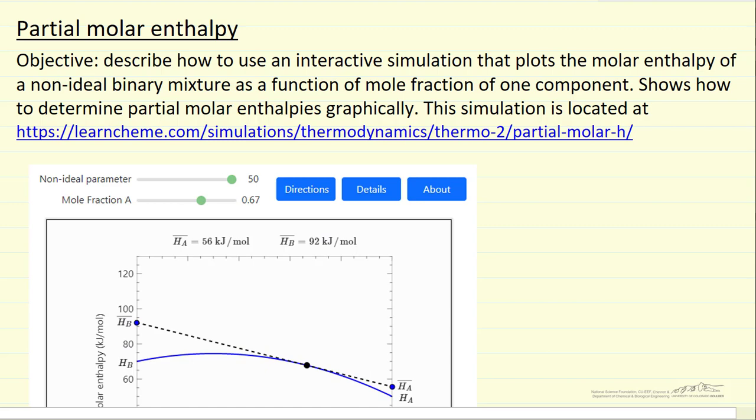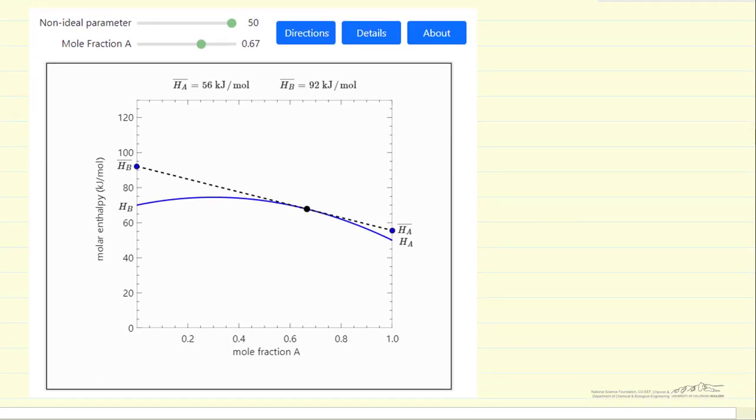So the simulation looks like this, and what we're plotting is the molar enthalpy of the mixture, that's the blue line, versus the molar fraction of one of the components, A.